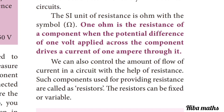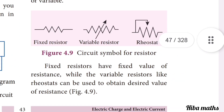We can also control the amount of current flow in a circuit with the help of resistance. Two components used for providing resistance are called resistors. Resistance can be fixed or variable, so resistors are either fixed or variable.